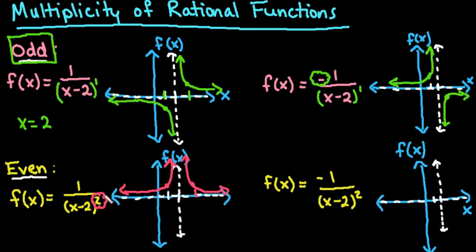when it has an even exponent on the term that gives you 0 in the denominator, it will always be on the same side of the horizontal asymptote. It'll be on the opposite side of the vertical, but the same side of the horizontal.